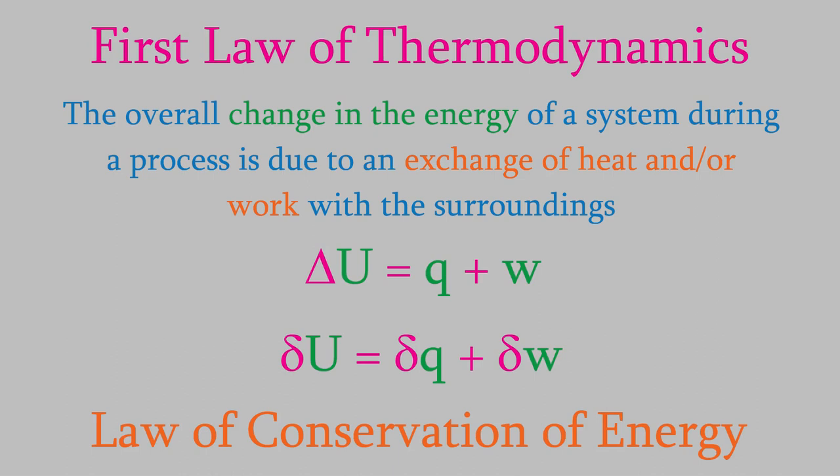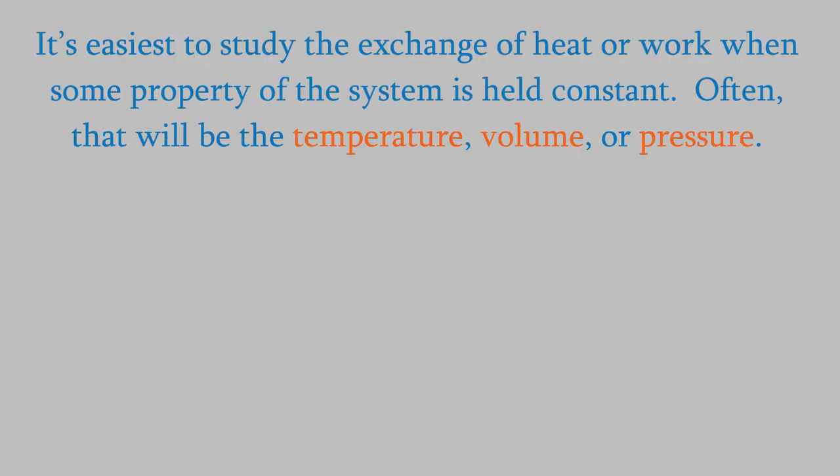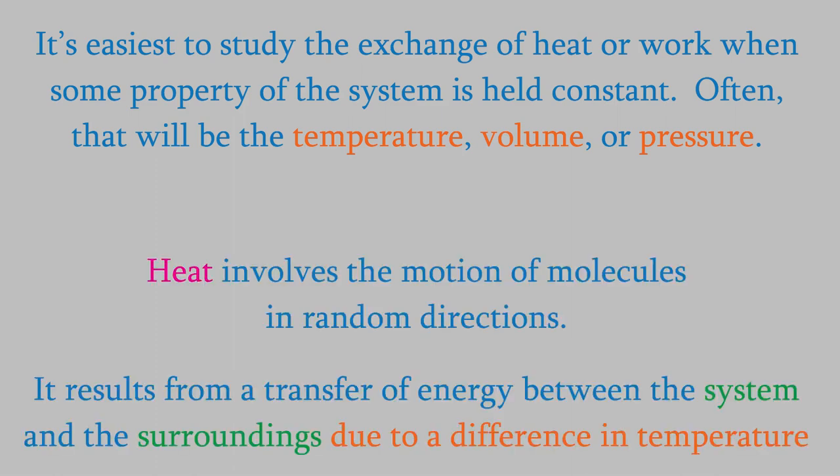So, now let's look a little more closely at the heat and work and think about what happens when one of these things changes. It's easiest to think about changes to the heat or work if we hold one of the properties of the system constant. Usually, the property we'll hold constant will be the temperature, the volume, or the pressure. Since we're interested in the heat right now, we won't hold the temperature constant. After all, heat involves a transfer of energy due to a difference in temperature between the system and the surroundings. So, instead, we'll hold either the volume or the pressure constant.